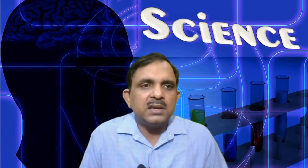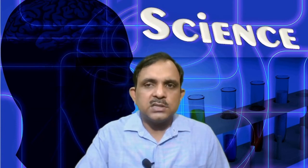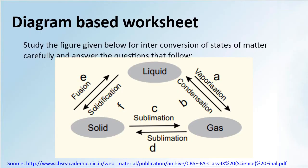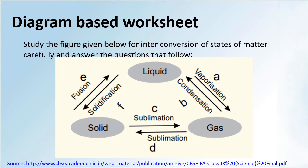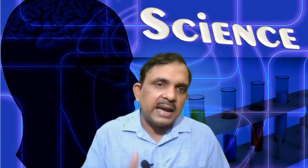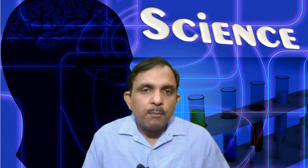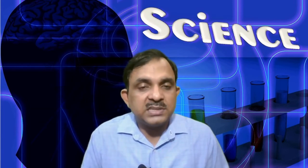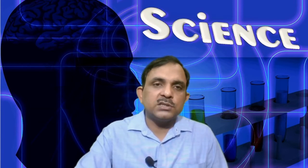For a diagram-based worksheet, you can give students a figure and ask them to study it carefully and answer questions. This example has been taken from a CBSE handbook on inter-conversion of states of matter. Students may be asked to name the processes marked as A, B, C, D, E, and F in the picture, or answer questions like: to which state of matter does a liquid change on increasing its temperature? What change do we expect on increasing pressure or lowering the temperature of a gas? When a liquid is cooled, it may change into a new state — what will that be? What is the process of sublimation? You can give a fully labeled diagram, a half-labeled diagram, or a diagram with certain terms missing.